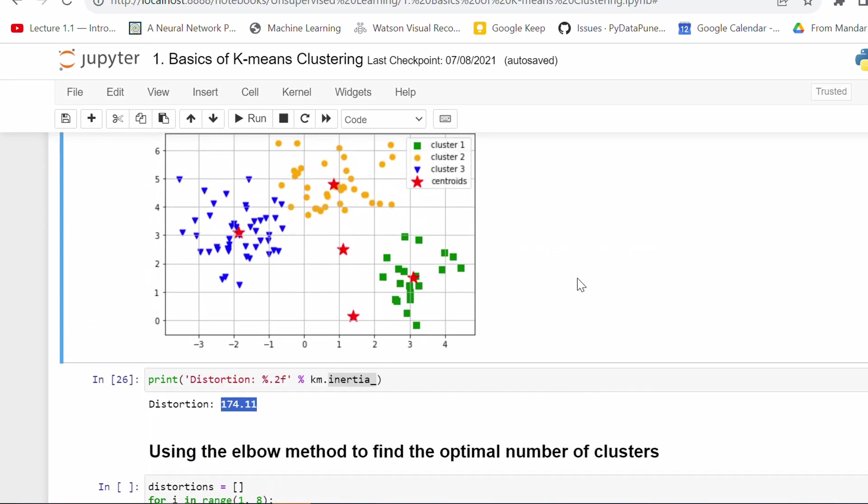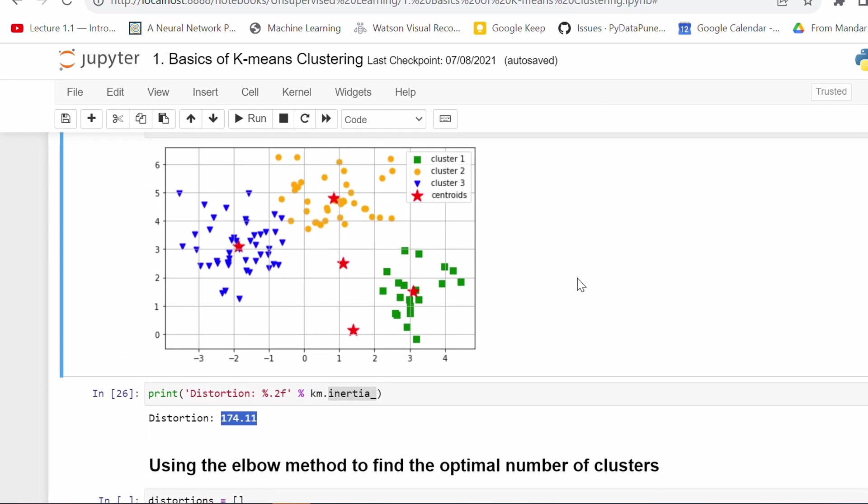So the question is, if I have huge data and if I cannot plot the data, how do I know how many clusters I can create? What is the optimum number of clusters? It will be difficult. Currently we have only 150 data points, so I can easily say three clusters is the best fit - the optimum value of K is three.